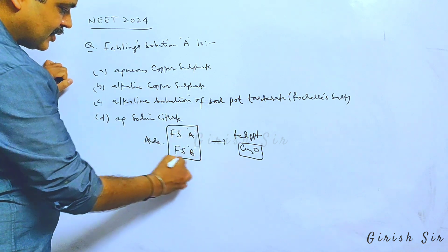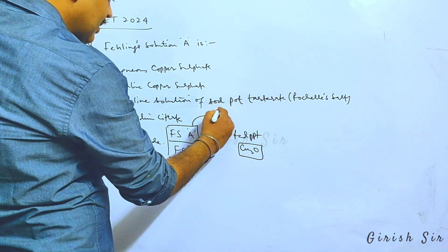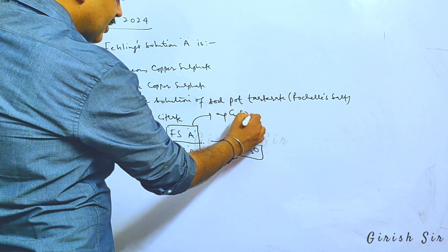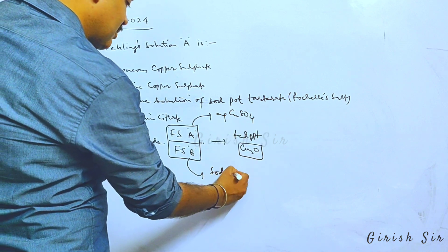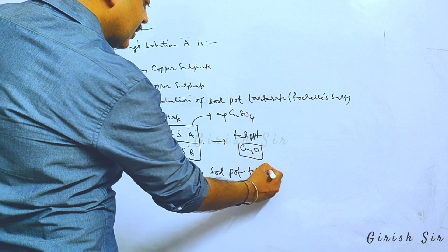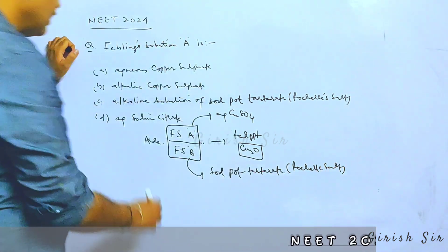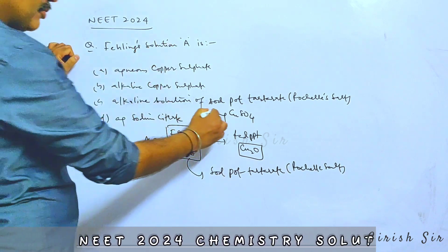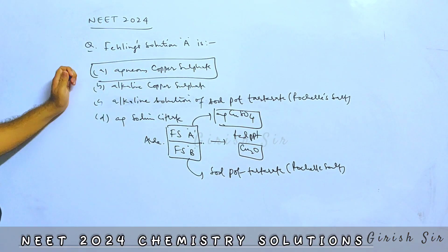Now here, two Fehling solutions A and B which are being added to the aldehyde. They contain: Fehling solution A contains aqueous copper sulfate, and Fehling solution B contains sodium potassium tartrate, also known as Rochelle salt. So here we need to answer Fehling solution A. That would be aqueous copper sulfate. So I believe this is the correct option.